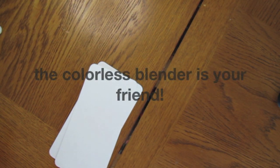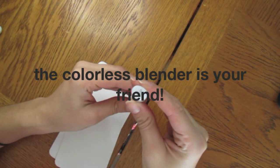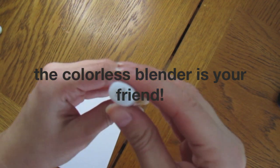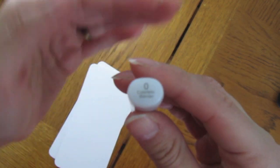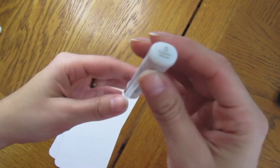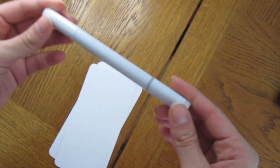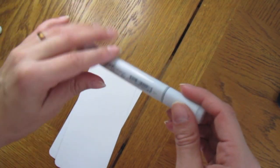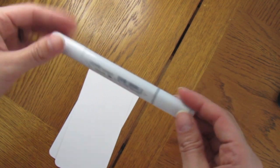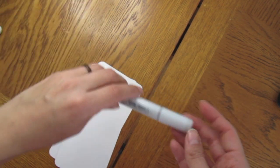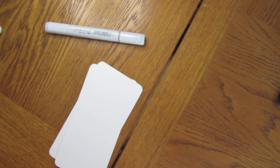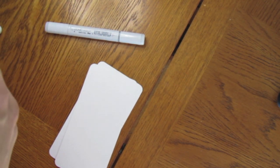First things first that you need to know, the colorless blender is your friend. Can you see it? It says zero at the top. And it is quite useful, it's the only one whose refill I have in the giant tub thingy.